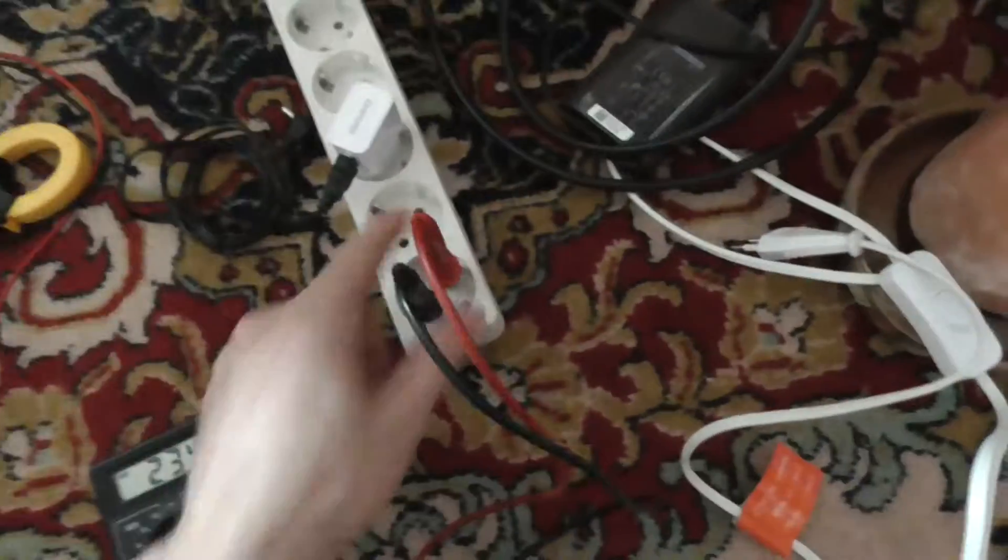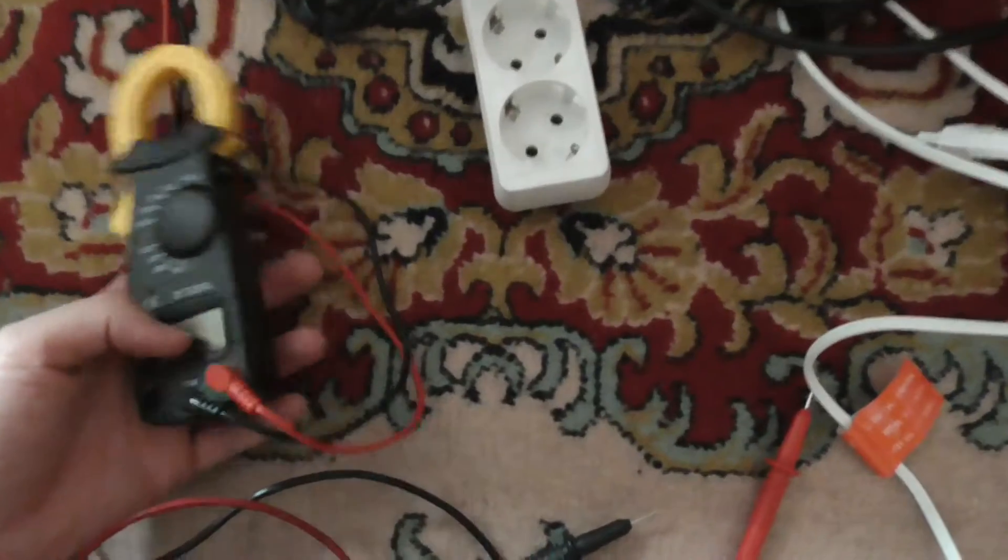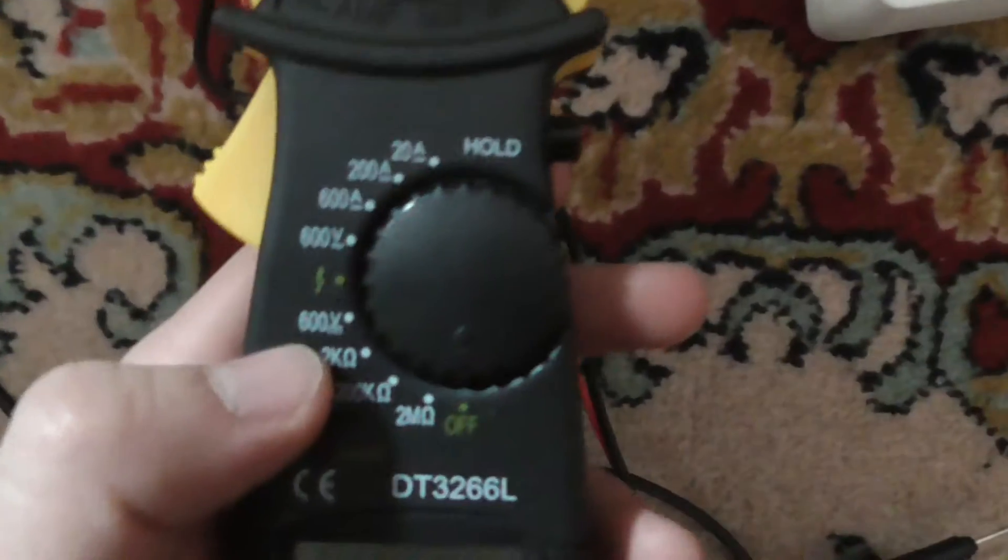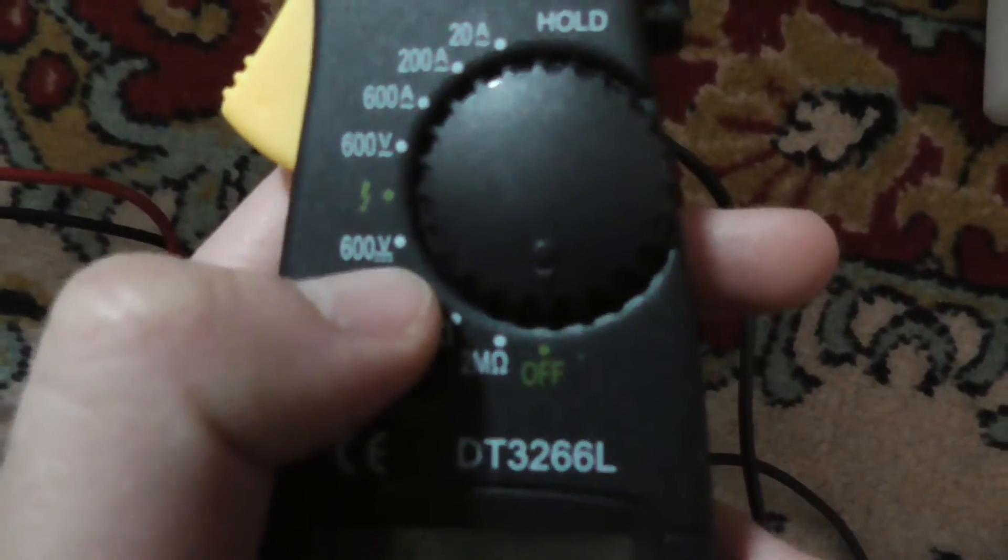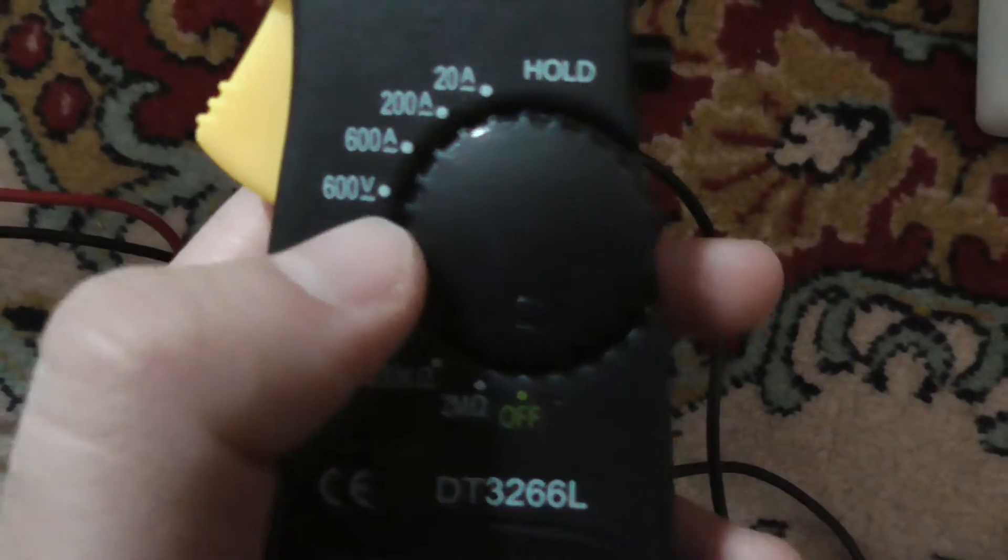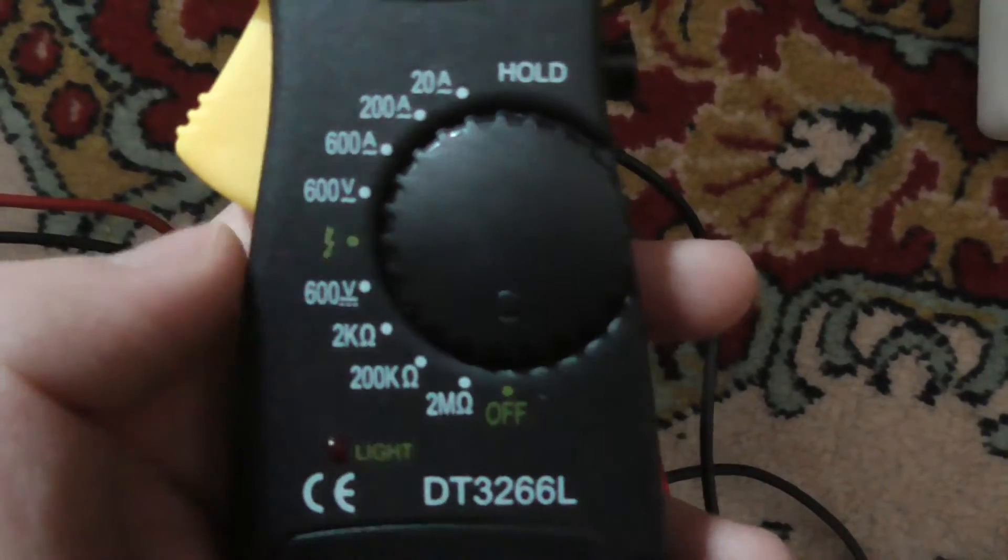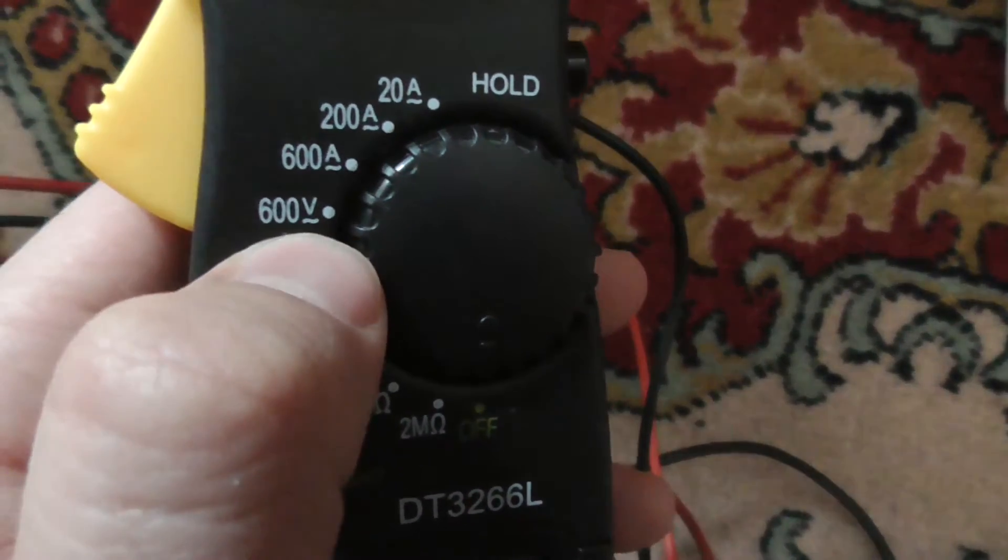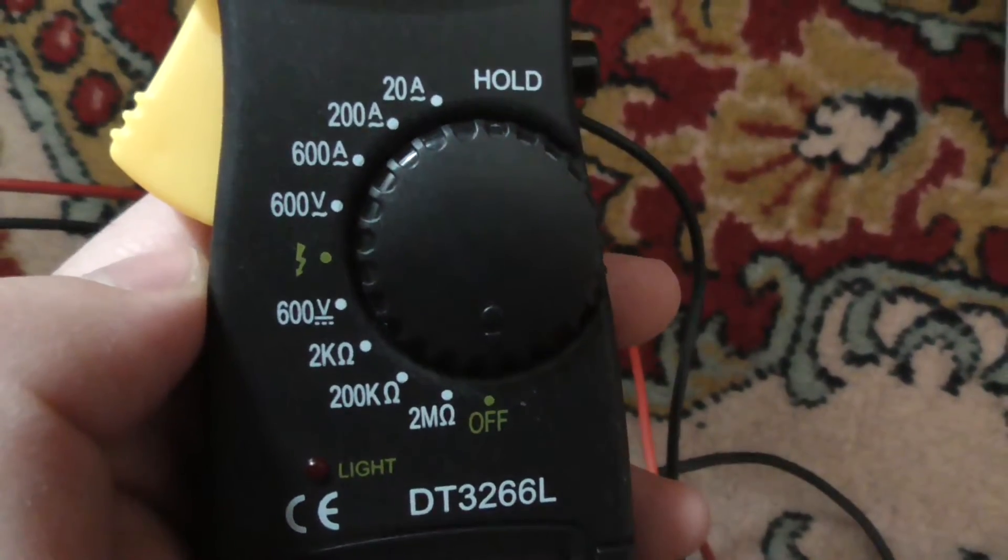Let's use another one. This is an amp meter but it has voltage also. It has 600 volts DC here because it's a straight line, and that's 600 volts AC because it's a wave line.